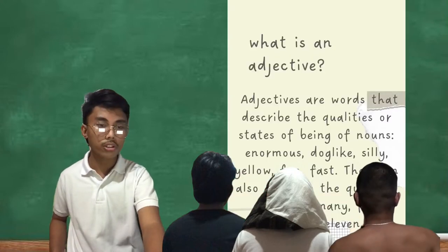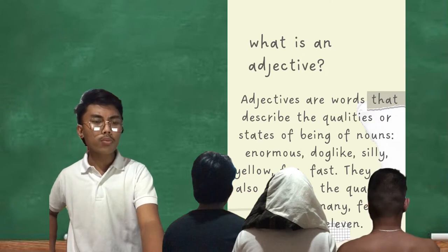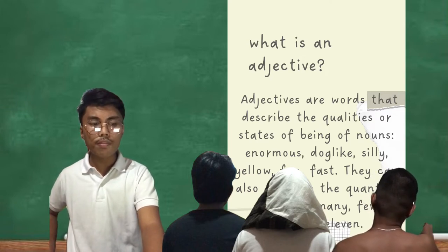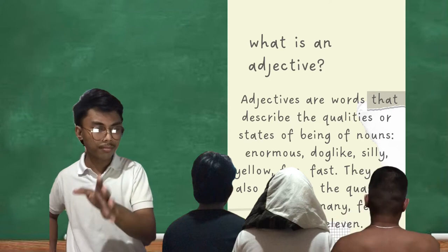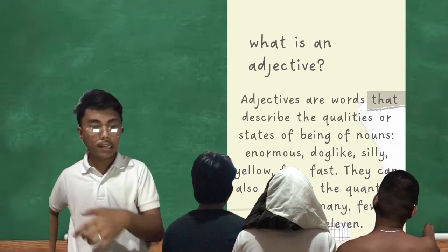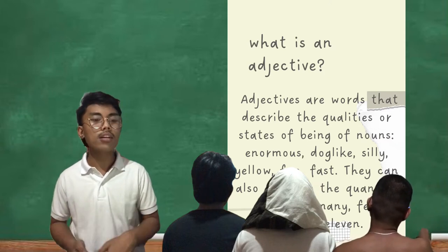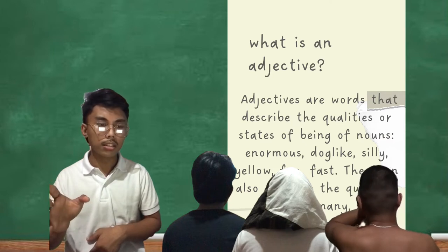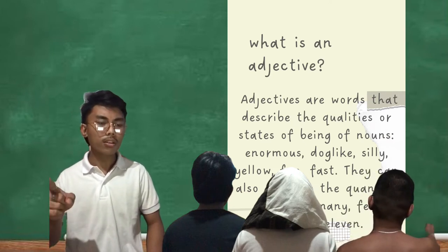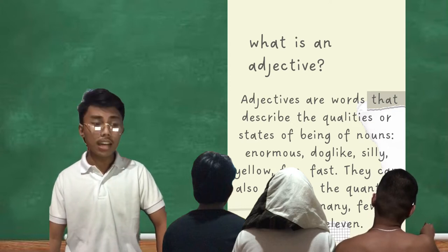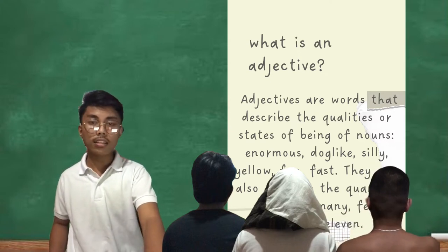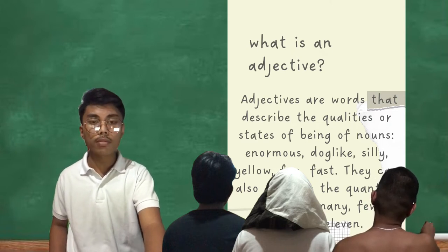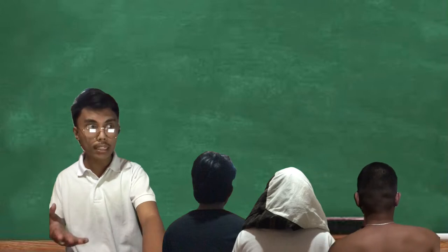Now, what is an adjective? Let us read the definition. Adjectives are words that describe the qualities or state of being of nouns. In other words, adjectives describe the noun — like the words enormous, dog, silly, yellow, fun, and fast. They can also describe the quantity of nouns, like many, few, millions, and eleven. Always remember: the adjective describes the noun.